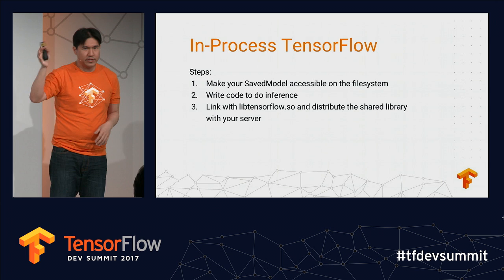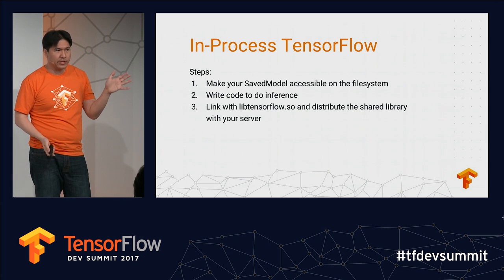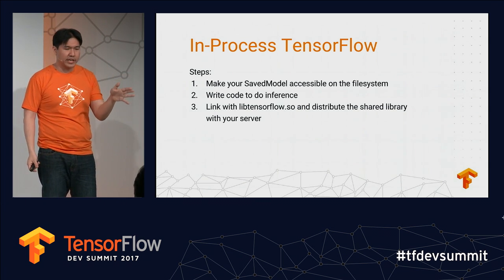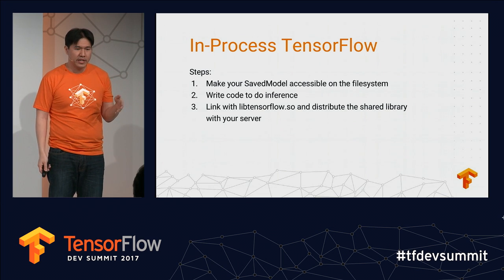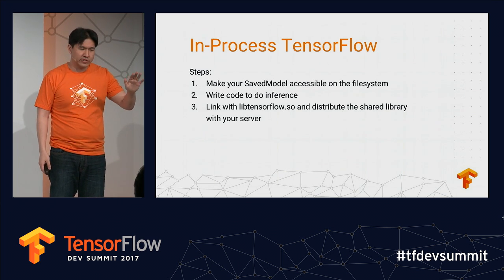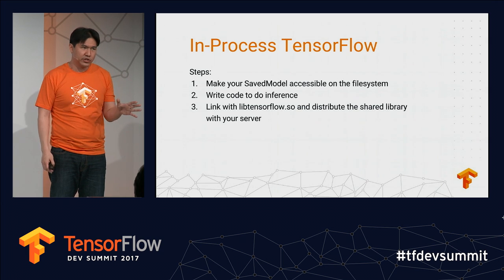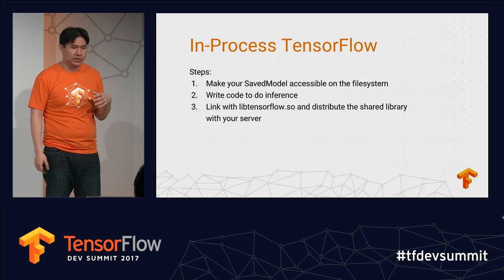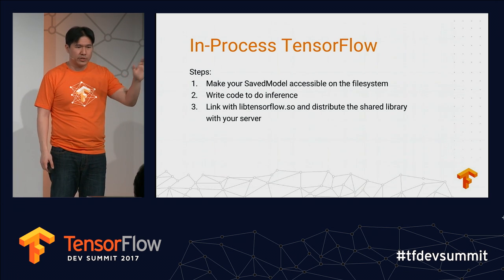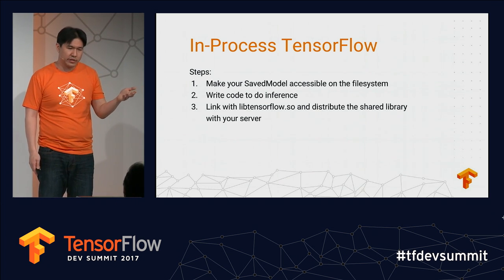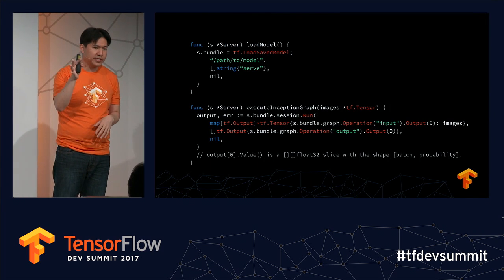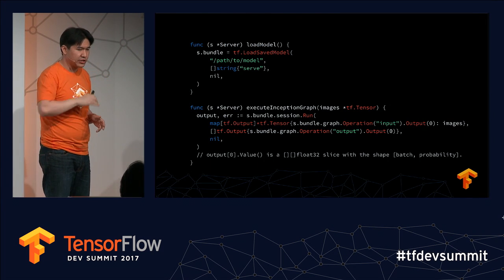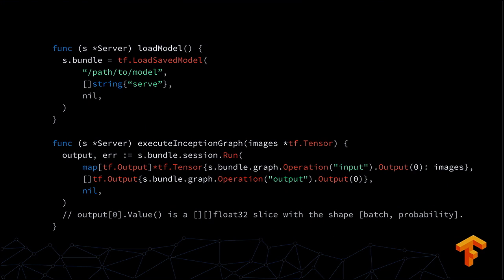Regardless of which option you choose, the first two steps are practically the same. You want to export your SavedModel, make it accessible, and then write the code to do inference. For in-process TensorFlow, you have the additional step of linking to TensorFlow's shared library, which we distribute — you can see that in our Go and Java instructions and download it directly, or build it yourself.